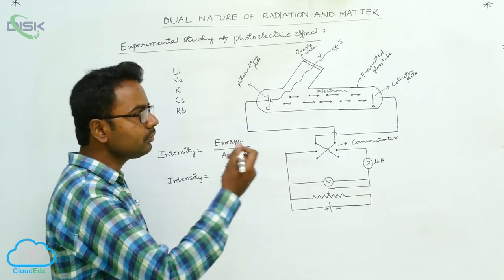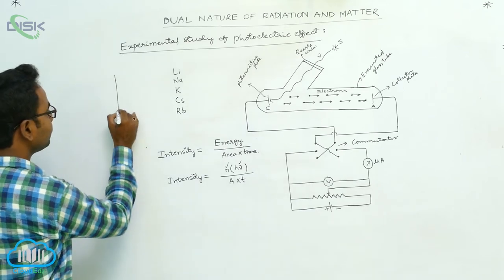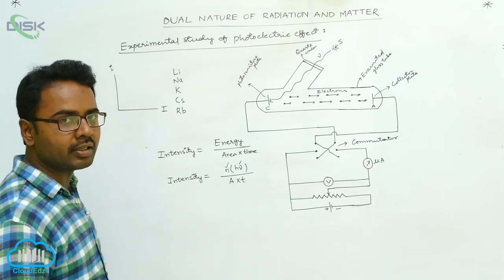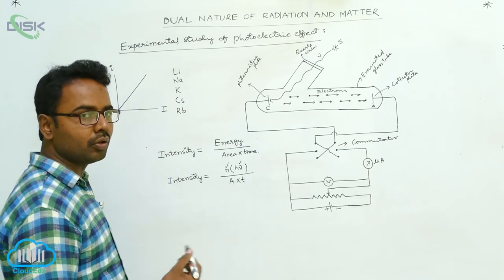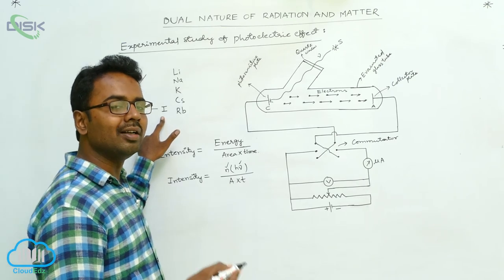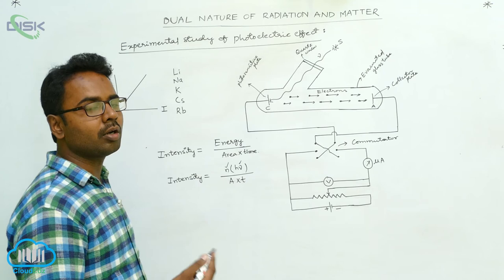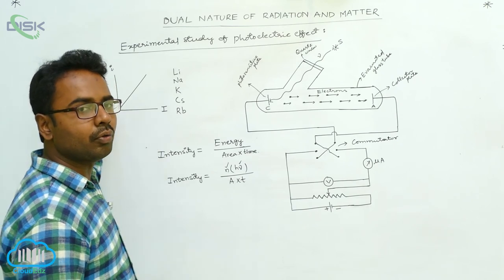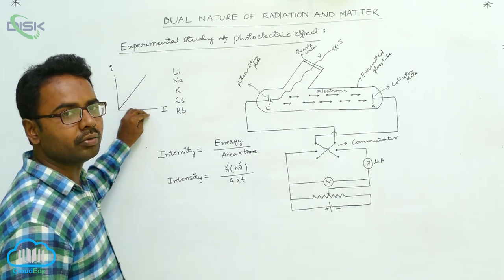There is direct proportionality between intensity of incident light and photocurrent. If we plot a graph with photocurrent i on the y-axis and intensity on the x-axis, the photocurrent increases linearly with intensity. Increasing intensity means more photons strike the unit area of the photosensitive plate per unit time, releasing more electrons, which causes more current. This graph shows the linear variation of photocurrent with intensity of incident light.